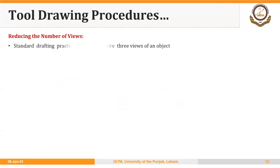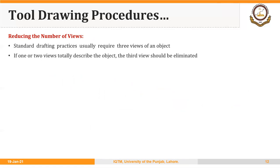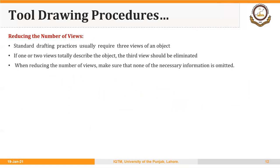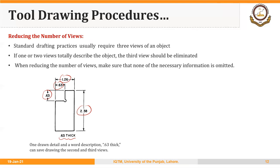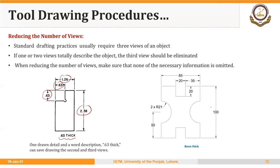Another important guideline is to reduce the number of views. Standard drafting practices usually require three views, but if one or two views totally describe the object, the third view should be eliminated. Make sure that when reducing views, none of the necessary information is omitted. For example, instead of showing the thickness in additional views, we can just mention '0.63 thick' or '8 mm thick throughout.' We will also see cases later where two, three, or even four views are needed.